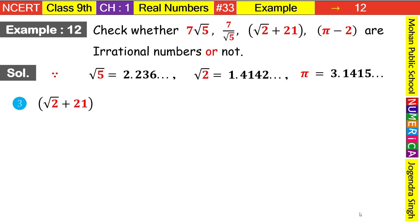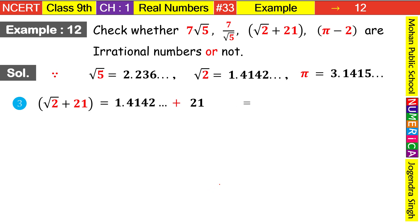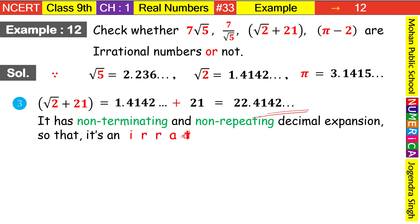Now for the third question: √2 + 21. We replace √2 with its value 1.4142. Since 21 has no decimal part, we add 21.000... to 1.4142..., so 21 + 1 = 22 and the decimal parts add together. Our result is 22.4142..., which is non-terminating and non-repeating, so it is an irrational number.